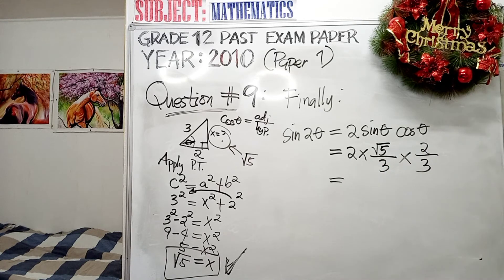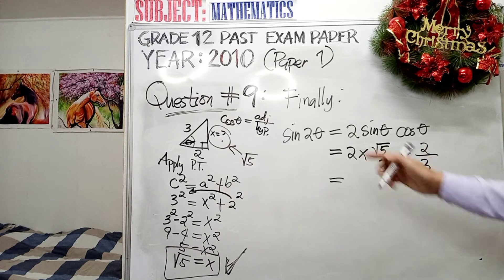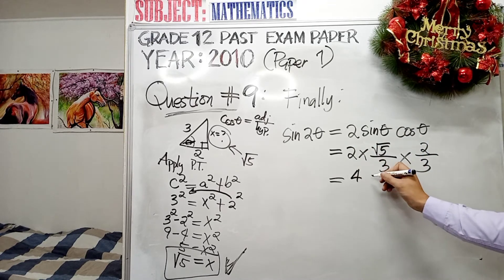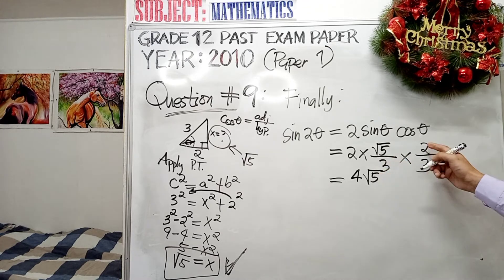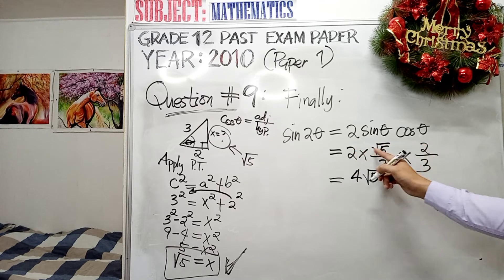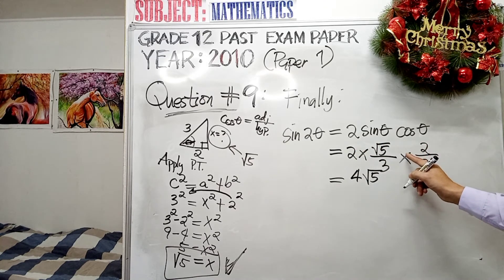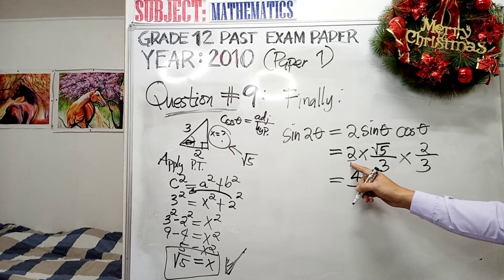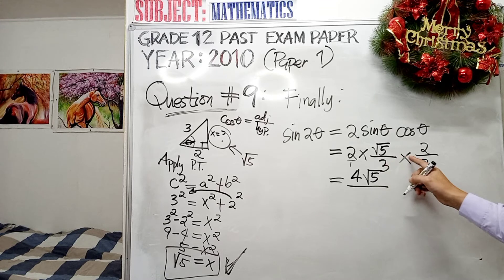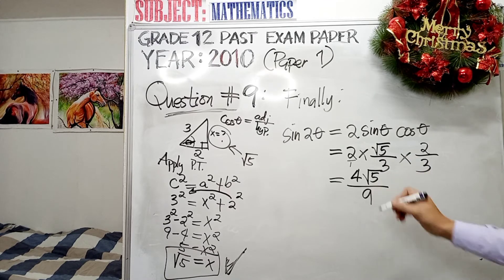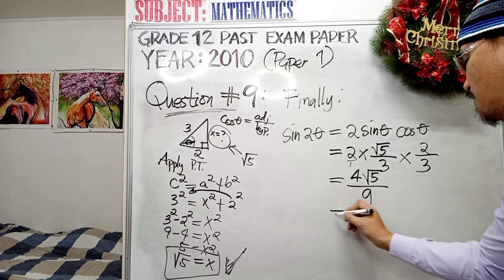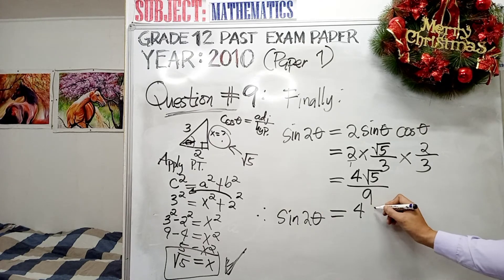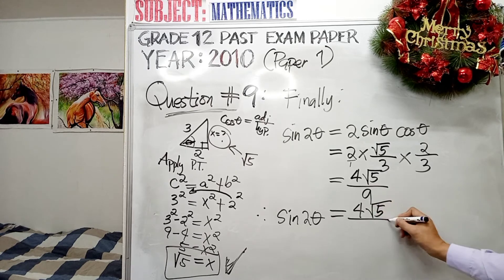Now we multiply: 2 × (√5/3) × (2/3). Multiplying 2 × 2 gives 4, so the numerator becomes 4√5. The denominator is 1 × 3 × 3 = 9. Therefore, the final answer is: sin 2θ = 4√5 / 9.